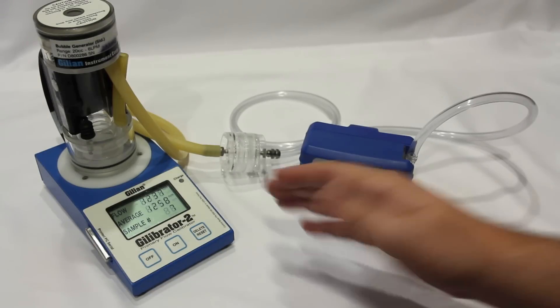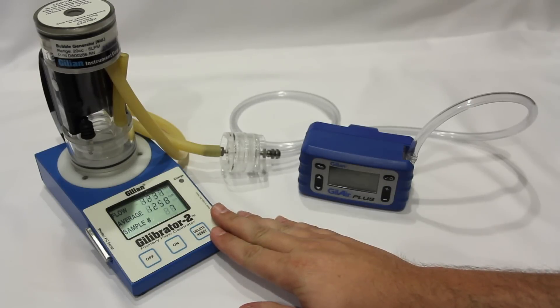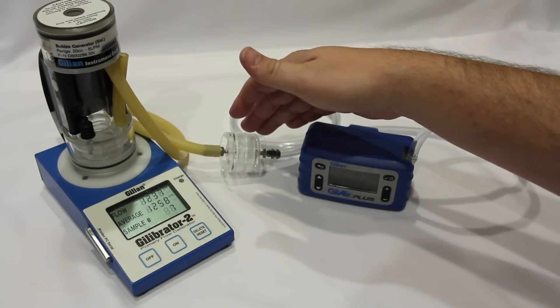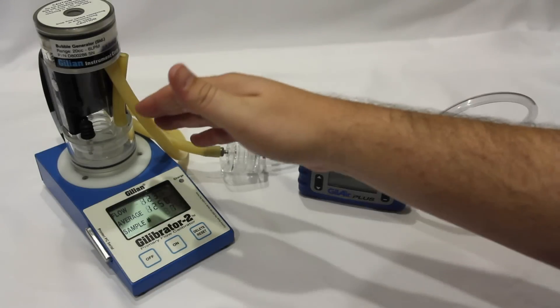To begin calibrating, set up the airflow calibrator per the manufacturer's instructions. Ensure that your sampling media is in line between the air sampling pump and the calibrator.